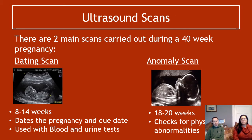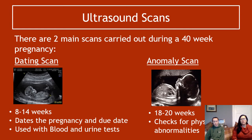Starting with ultrasound — there are two scans that happen during a normal pregnancy with no background health issues. The first scan is called the dating scan, and it does exactly what it says on the tin: it dates the pregnancy and the due date. There are particular stages of development; the doctors know that if it's three millimetres long, you are six weeks into your pregnancy.